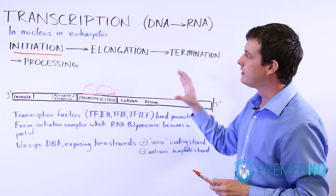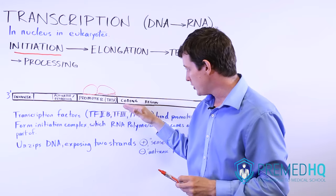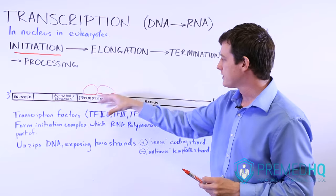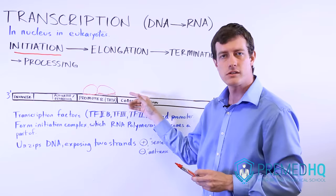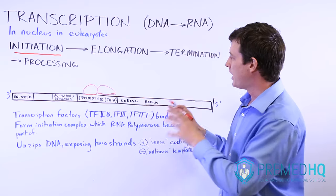And so the big things to know about initiation are that there is a promoter region. The transcription factors come in and bind it because they recognize some sequence, often the TATA sequence. And then they bind that, form an initiation complex.